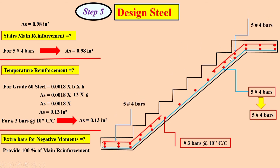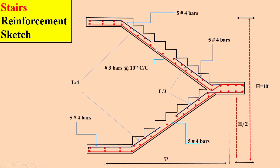The extra bars are extended L/4 and L/3 distances on each side. So the final reinforcement sketch is: 5 number 4 main bars, number 3 temperature bars at 10 inches center-to-center spacing, and extra bars extended L/4 at one location and L/3 at another location. So dear students, this was today's topic. I hope it is clear. Inshallah in the next class I will be present with a new video. See you in the next video, thanks for watching, Allah Hafiz.